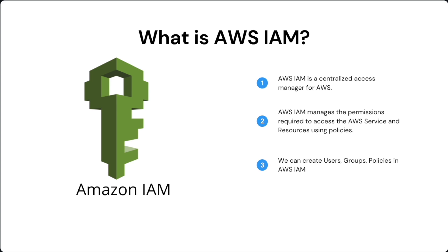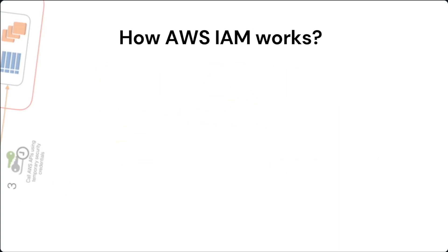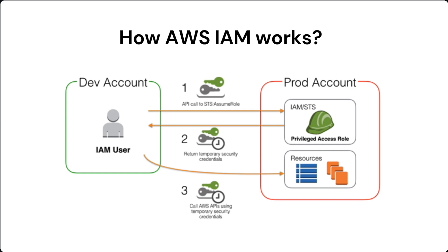Using IAM policies, IAM manages the level of access to the services on a granular level. For example, service engineers can only have read-only access and will not be able to make any changes. The next question is: how does AWS IAM work?